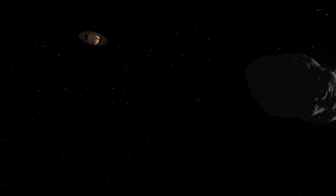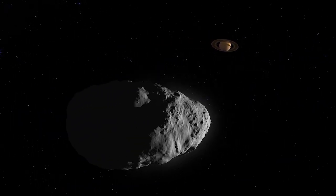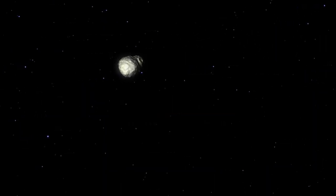Through millions of years, Bennu's orbit gradually tightens until it interacts with Saturn's gravity, altering its trajectory, and hurling it into the inner solar system.